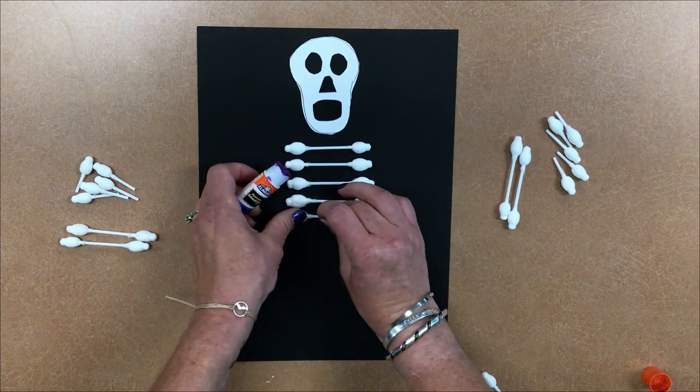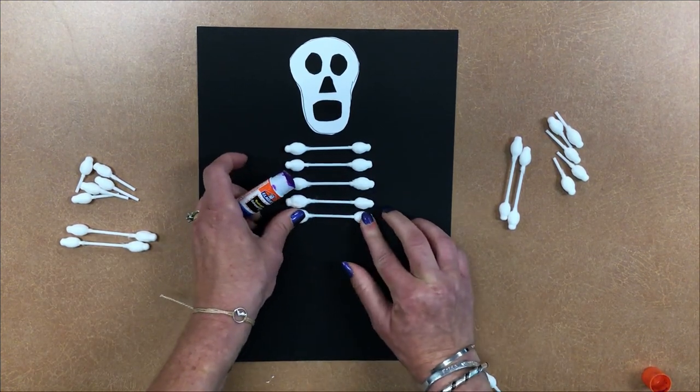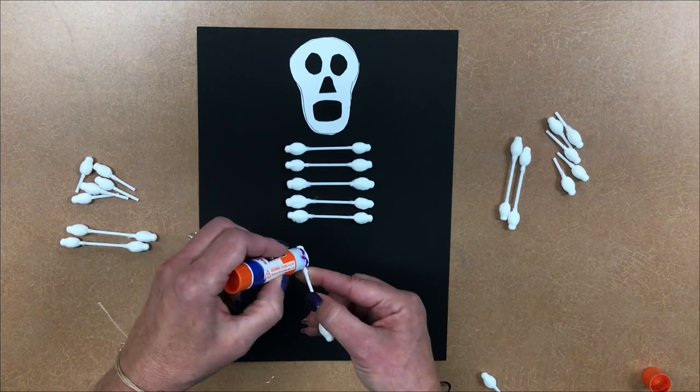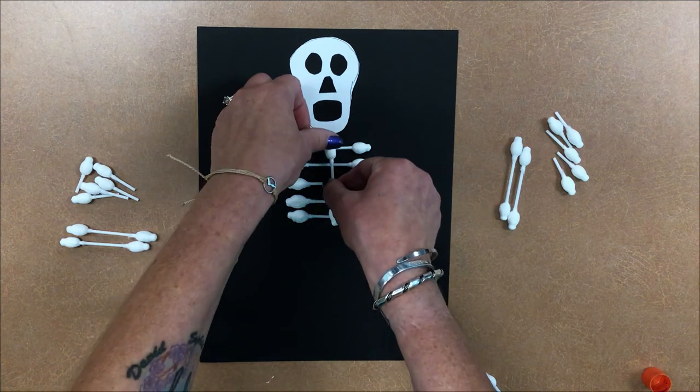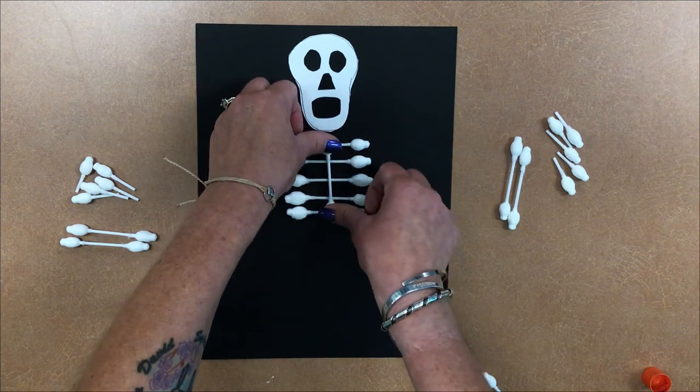Then we want to do our spine. Again, put glue on the sides, on the cotton parts, and smush down.